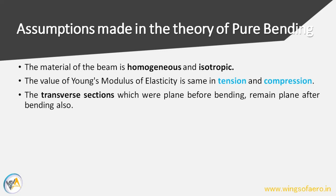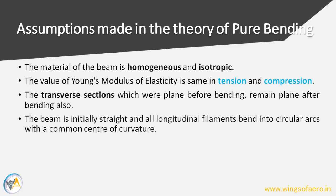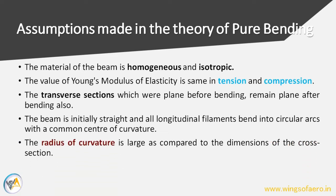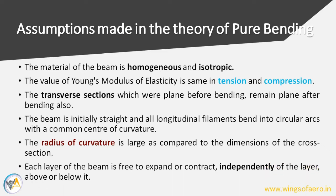The transverse sections which were plane before bending remain plane after bending. Also, the beam is initially straight and all longitudinal filaments bend into circular arcs with a radius of curvature common from the center of any section. The radius of curvature is large compared to the dimensions of the cross section, and each layer of the beam is free to expand or contract independently of the layers above and below.